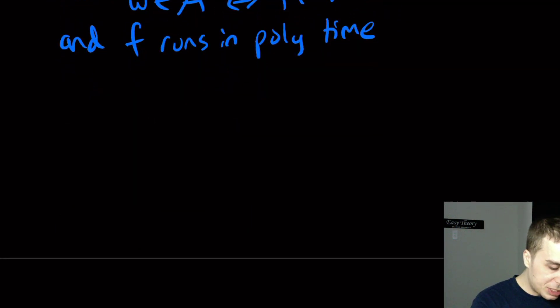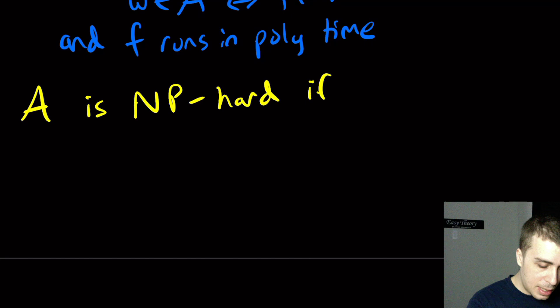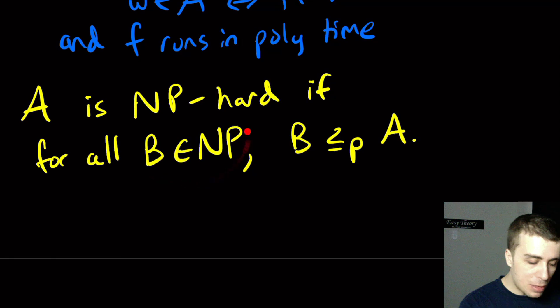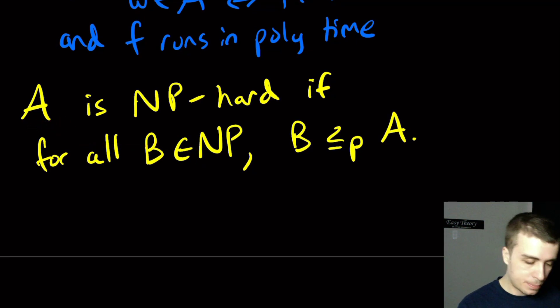Then a notion of what hardness means is that we talk about these polynomial time reductions among NP problems. So we're going to say that a language A is NP-hard if for all B in NP, we have that B reduces to A. So that means every single problem in NP poly reduces to A, every single one. Then we call that problem A NP-hard.